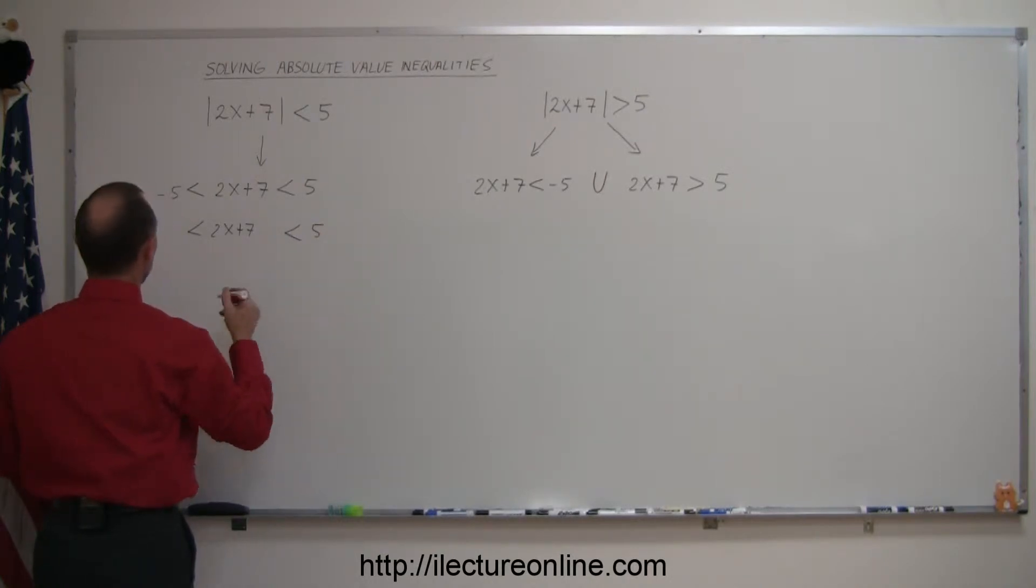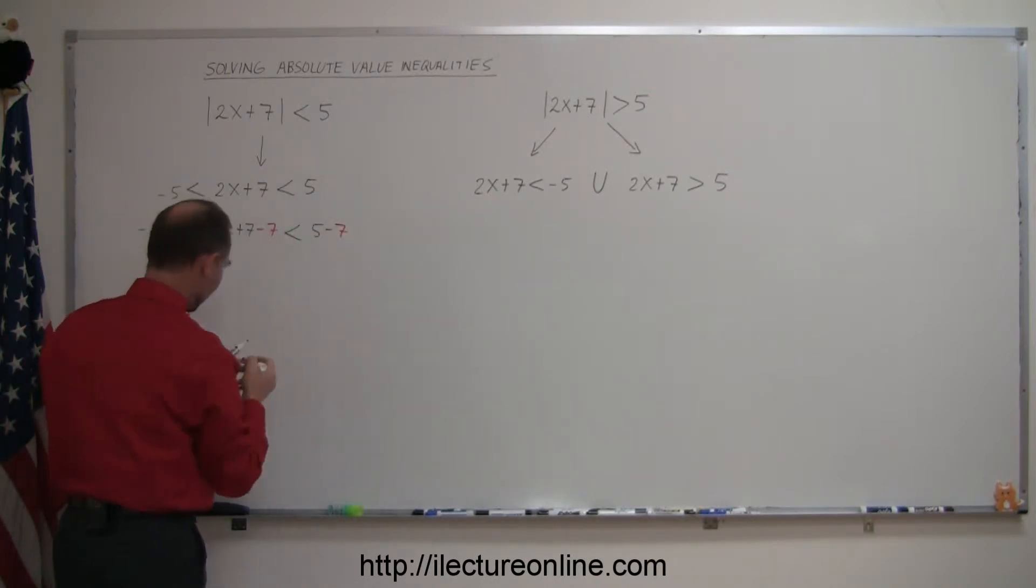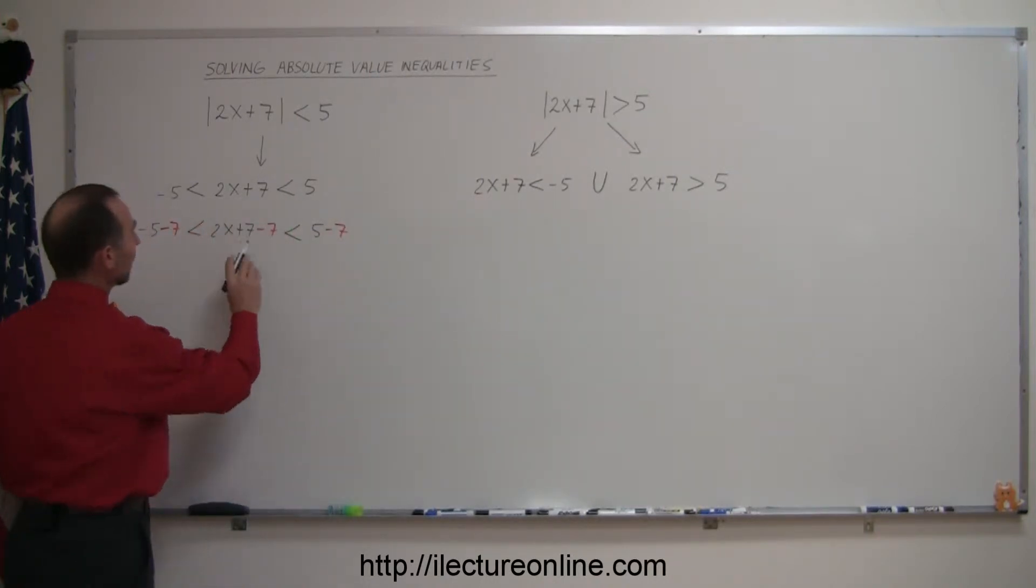And of course, you want to subtract a 7 from there, from there, and from there. That means everything is still the same. But notice when you do that here, the 7s disappear, and minus 5 minus 7 is minus 12, less than 2x, which is less than 5 minus 7, which is minus 2.